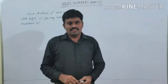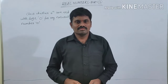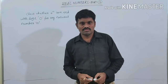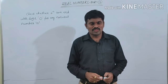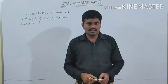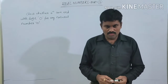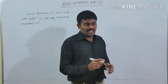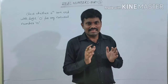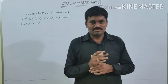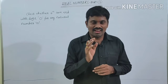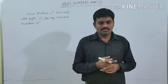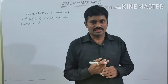Hi students, welcome to Real Numbers Part 3. Today we are going to discuss some problems related to unit digits in the expansion of exponents by using the prime factorization method. Before going to the topic, see if the given number must be divisible by 10. This is only possible if the last digit of the given number is 0.